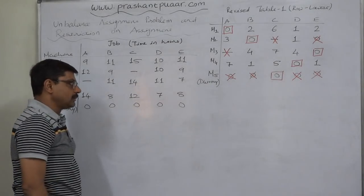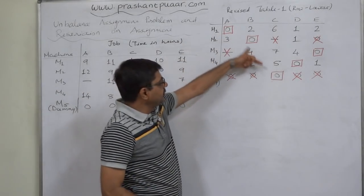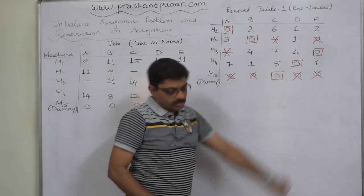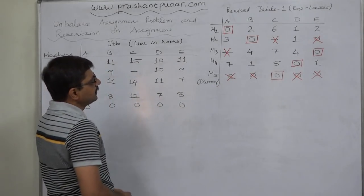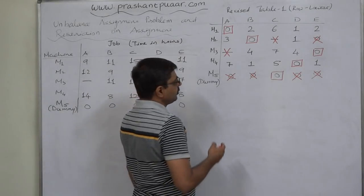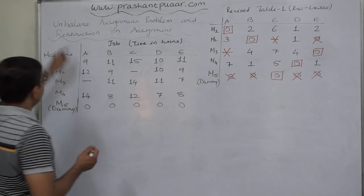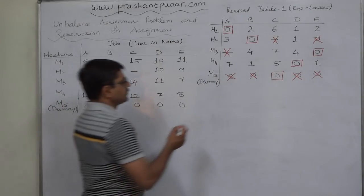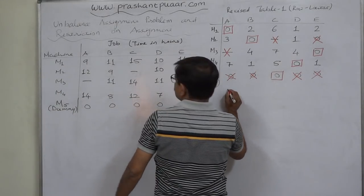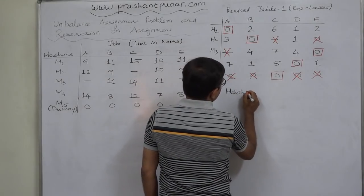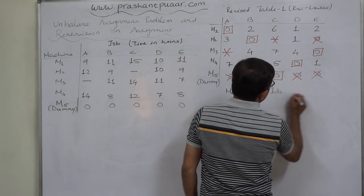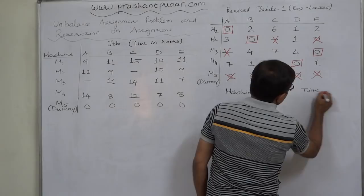Let us check all the columns and all the rows have assignment. Yes. So this is the optimal assignment or optimal solution of the assignment problem which was originally unbalanced and with restrictions. What is the situation of total time? Machine, job, time in hours.